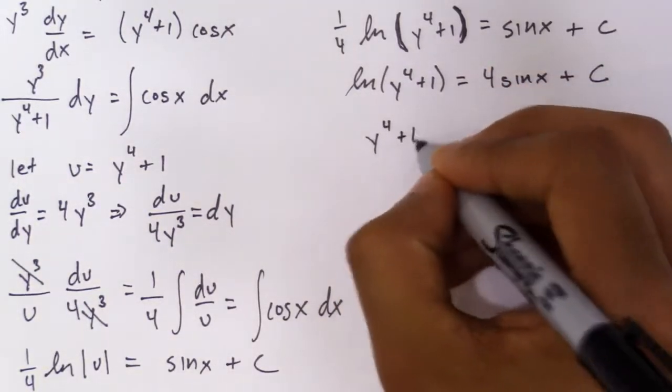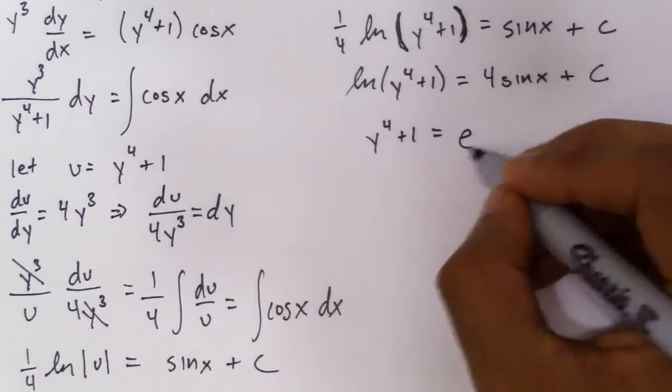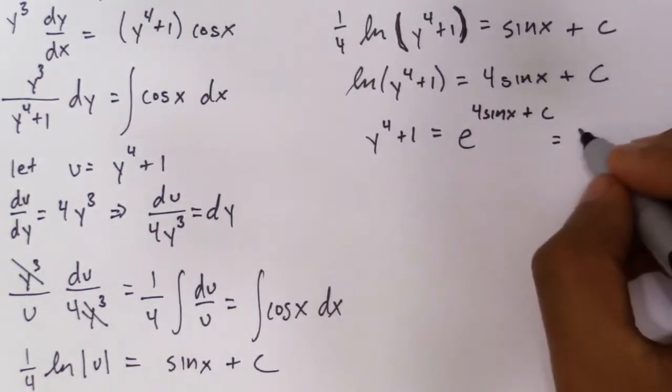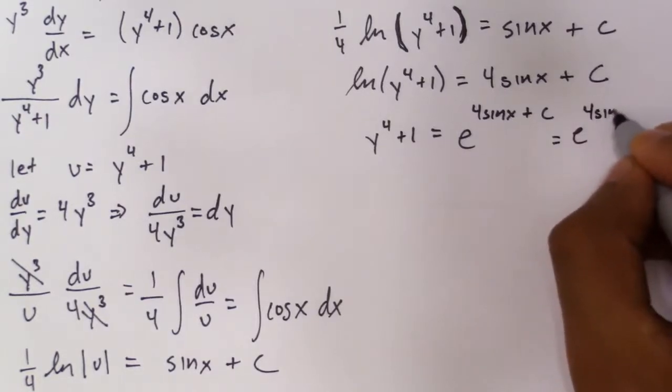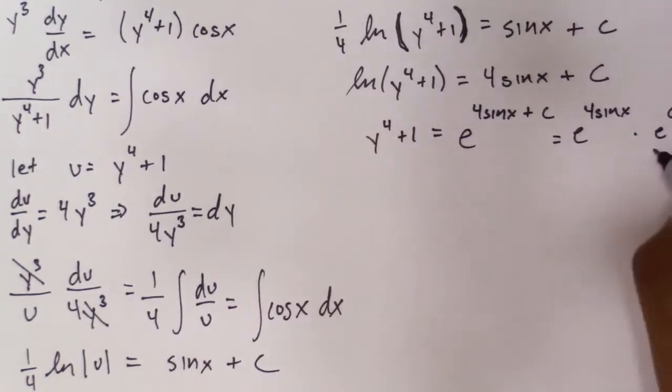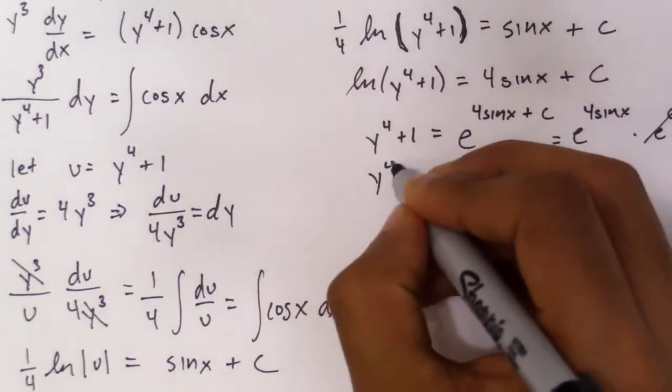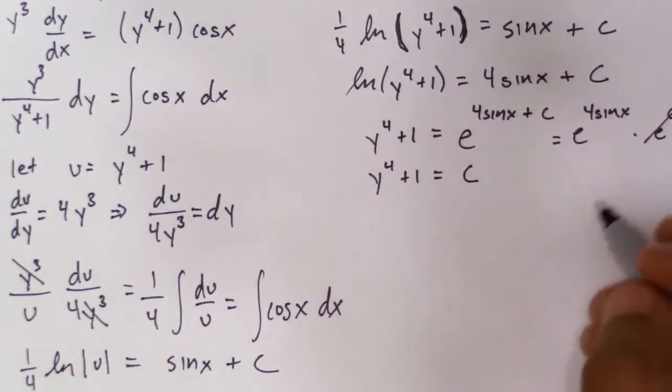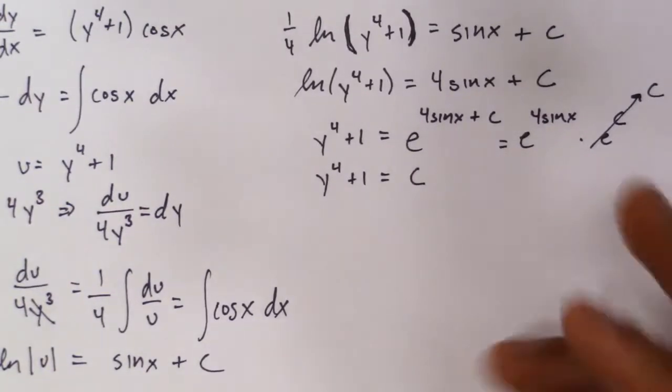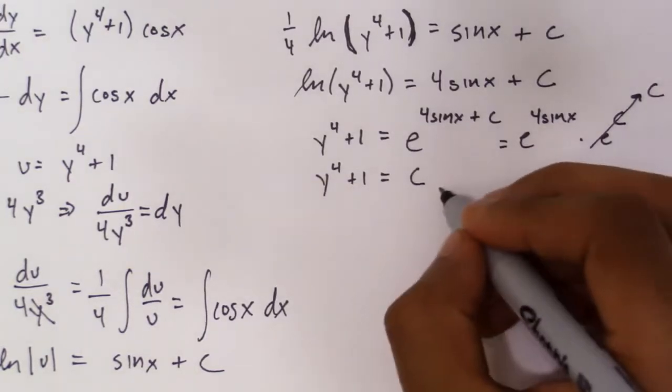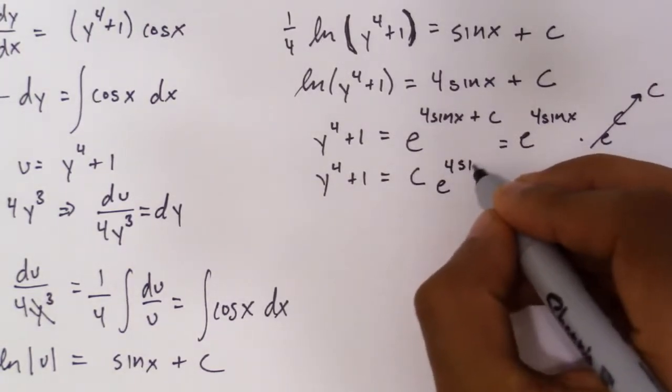Now to solve for y, you have to take the e of both sides. So you get y⁴+1 equals e^(4sin x + C). But this is also equal to e^(4sin x) times e^C. And this is just another constant. So we could rewrite this as y⁴+1 equals C e^(4sin x).